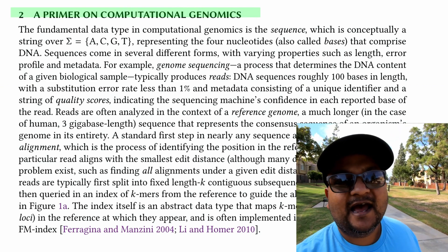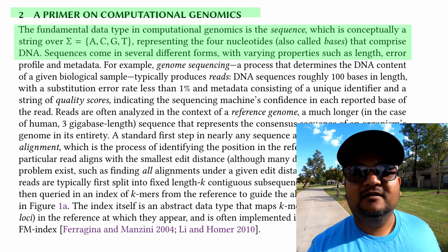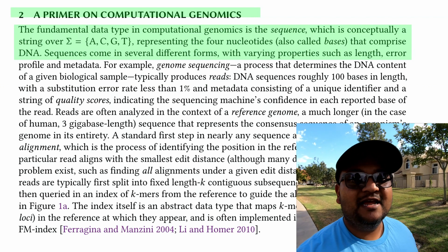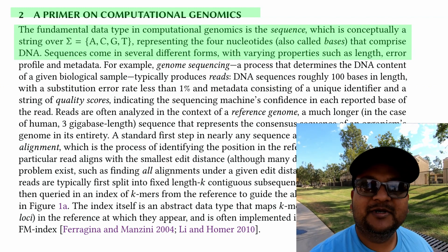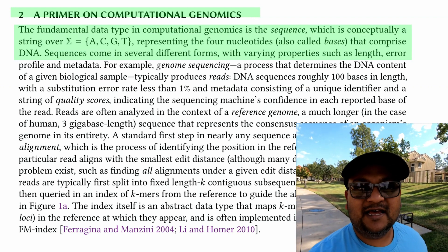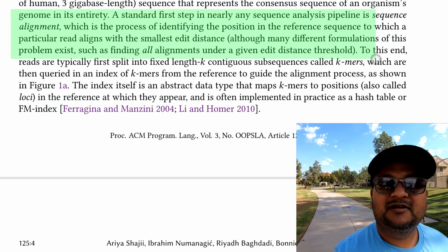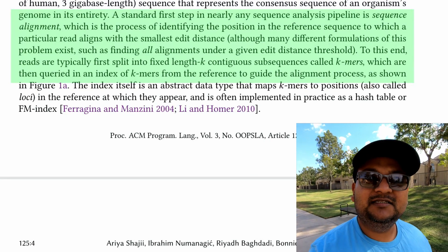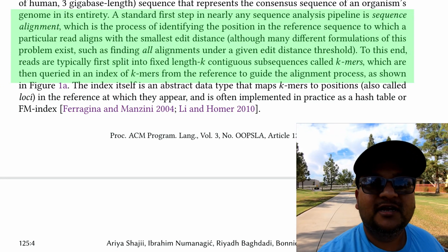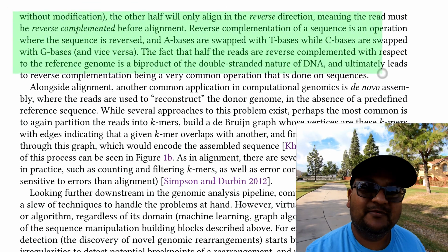So what are the computational tasks specific to bioinformatics and gene sequencing that we are trying to express and optimize? The first thing to know is that we are operating over sequences — gene sequences — and these are strings over the four bases that make up DNA: A, C, G, and T. A very common task is sequence alignment, where you get what is called a read of a gene sequence and try to align it with a standard known gene sequence. The way you do that is by breaking up your read sequence into substrings of length K, called K-mers.